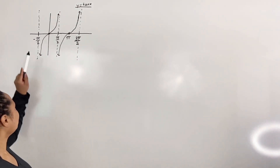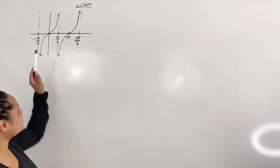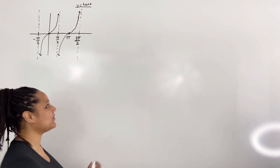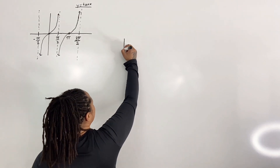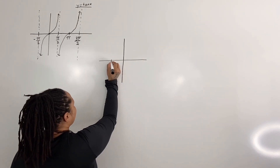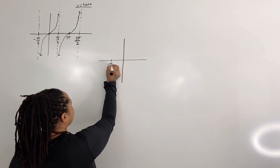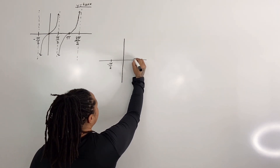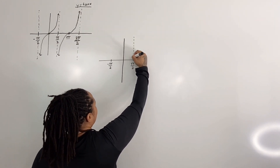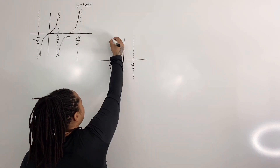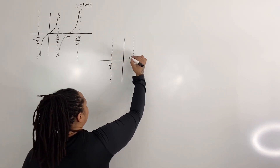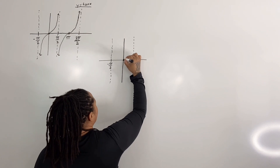So we restrict the domain from negative pi over two to pi over two. Let's redraw the graph with the restricted domain. We have our vertical asymptotes at negative pi over two and pi over two, and we have a point at zero zero and the graph goes out like this.